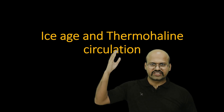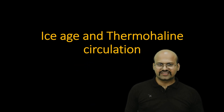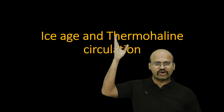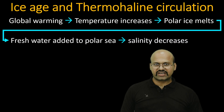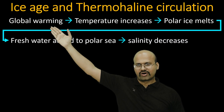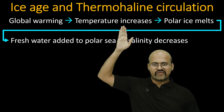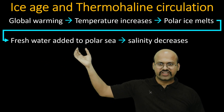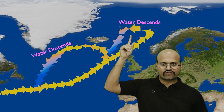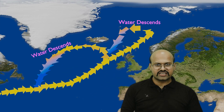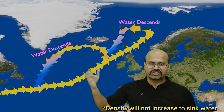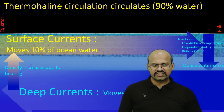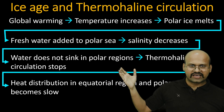Many people believe that if thermohaline circulation stops, an ice age will come. The chain of events is: global warming increases temperature → polar ice melts → large amounts of fresh water are added to the polar sea → salinity in the polar region decreases → density does not increase enough → water stops descending in polar regions → thermohaline circulation breaks down.